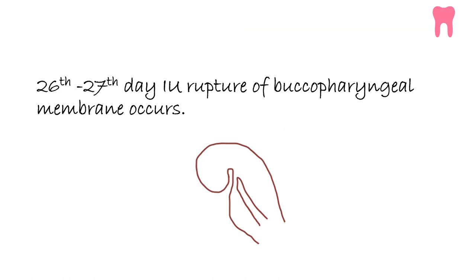We all know about the folding of the embryo. This is the head bulge and this is the cardiac bulge. Due to the folding of the embryo, the oral cavity is lined by the ectoderm. The foregut will be lined by the endoderm and they are separated by a thick buccopharyngeal membrane. This buccopharyngeal membrane will rupture by the 26th to 27th day of intrauterine life. Due to its rupture, the oral cavity can now communicate with the foregut.